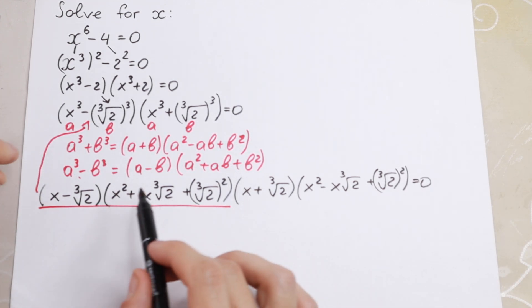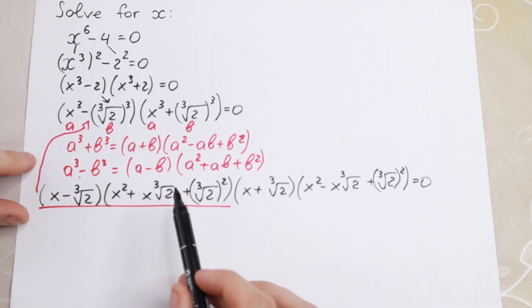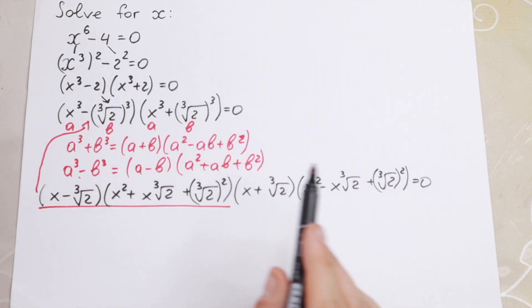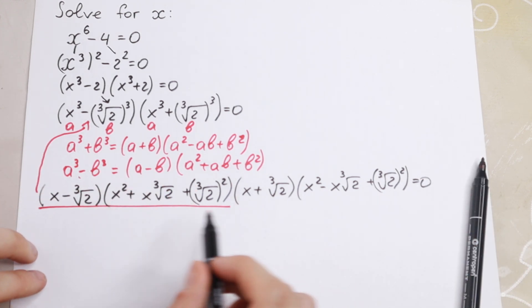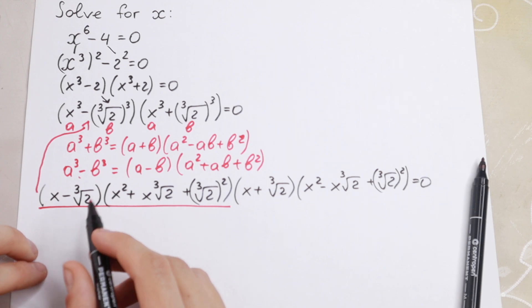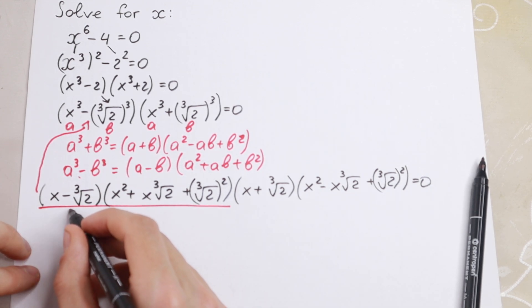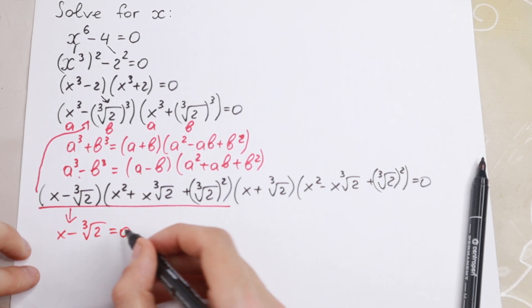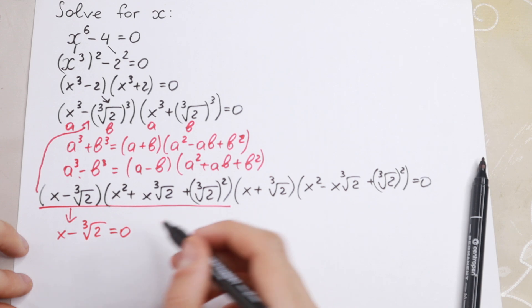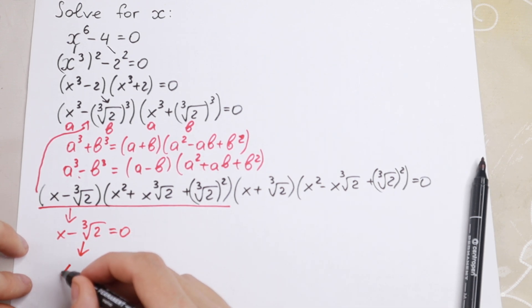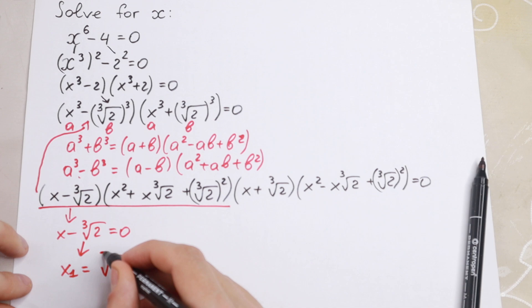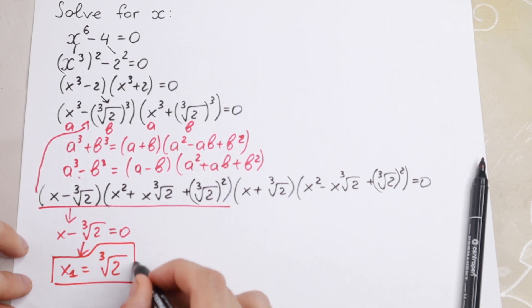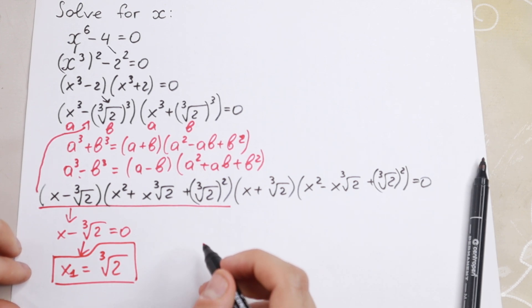So as you can see we have four expressions equal to 0. We can solve the easy expressions first. Right here we have x minus cube root of 2, so x minus cube root of 2 equals 0. From here we find our first root: x₁ equals cube root of 2.